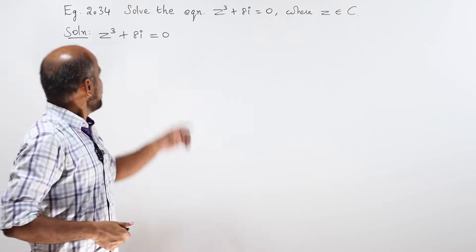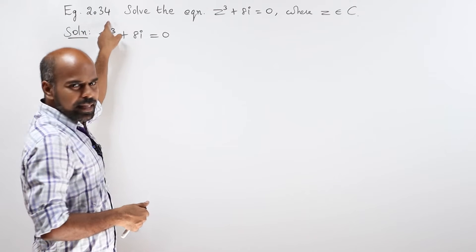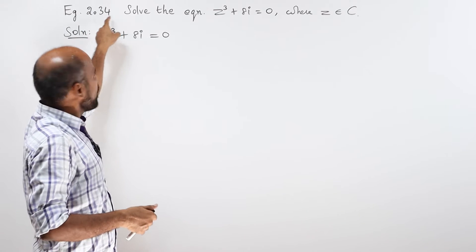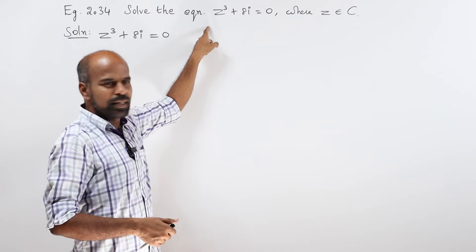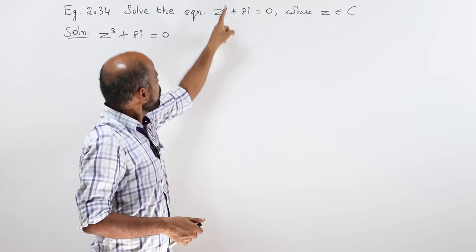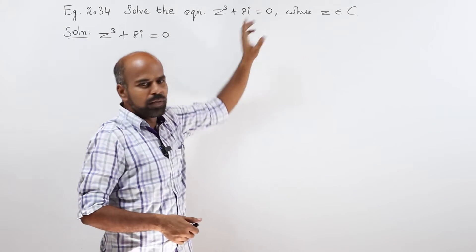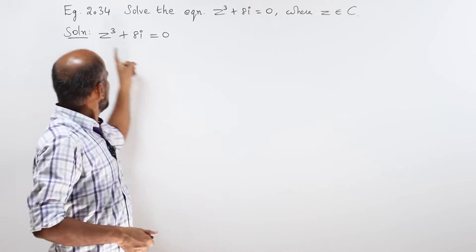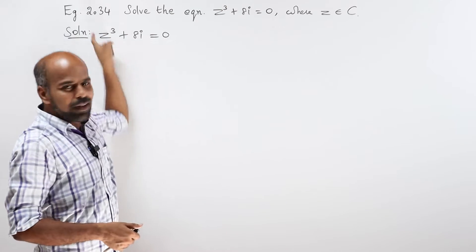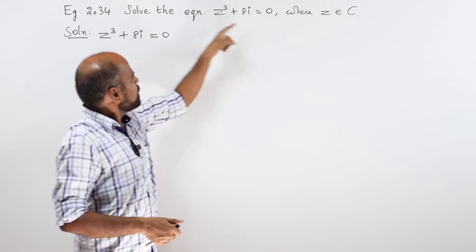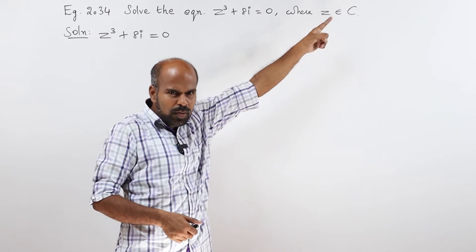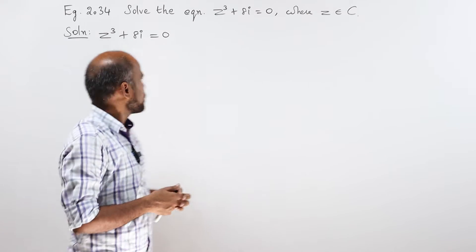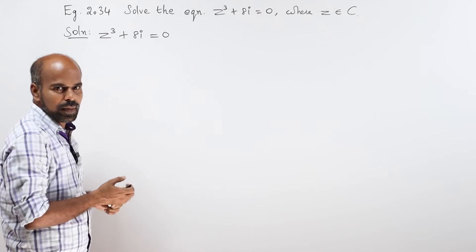Hello students. Let us see example 2.34. Solve the equation z cube plus 8i equal to 0. It is solved where z belongs to complex numbers.